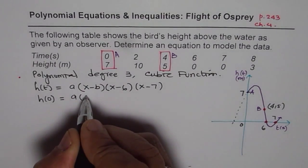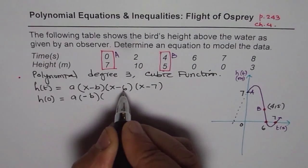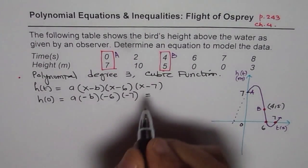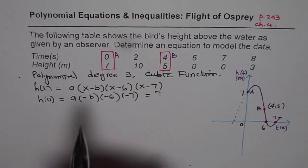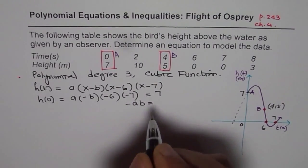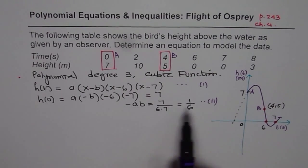Substituting a, that is x value 0. So we have height at t equals to 0. So if I write 0 here, I get a times minus b, 0 minus b is minus b, and that gives me 0 minus 6, 0 minus 7, and all this is equal to 7. And three negatives will give me a negative. So I get negative a times b equals to 7 divided by, I am dividing by 6 times 7. And that is 1 over 6. So I am calling this to be my, let that be the original equation. So I know product of a and b. Negative product of ab is 1 over 6.